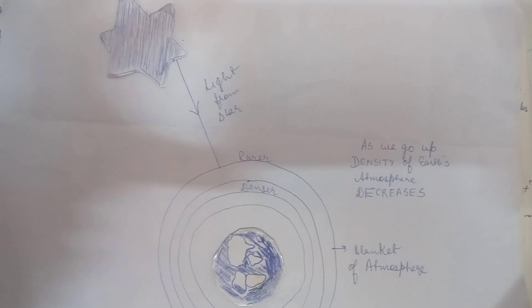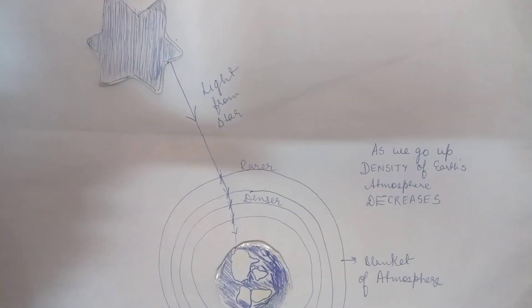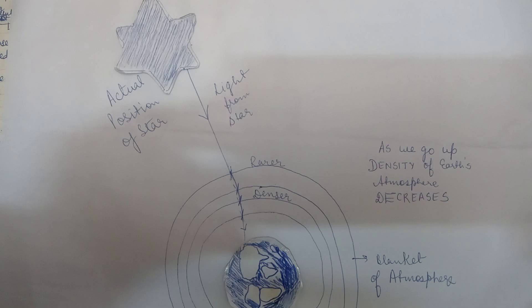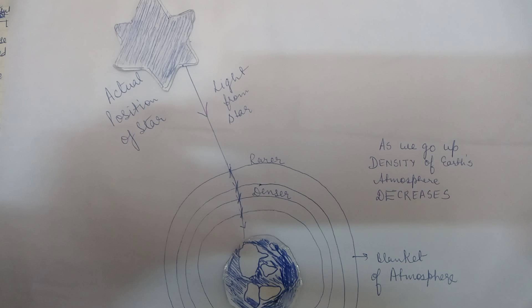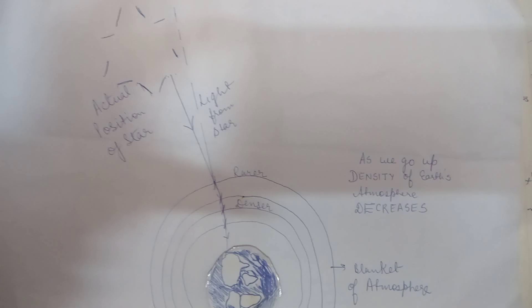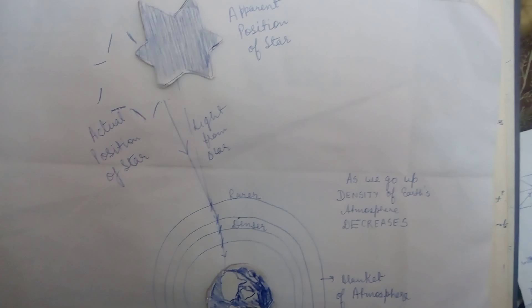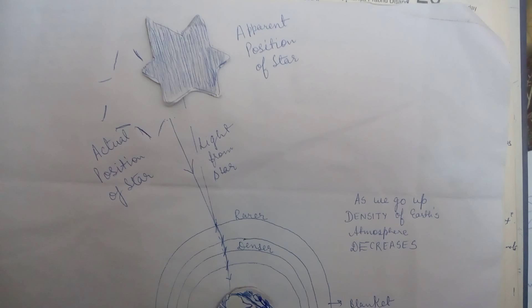Light coming from a star, when it enters the Earth's atmosphere, goes from rarer to denser medium. That is, it bends towards the normal. Light from the star, however, if considered to be coming straight, seems to appear to come from a point which is above the actual position.